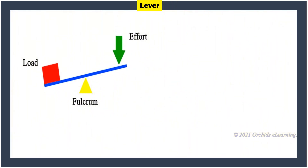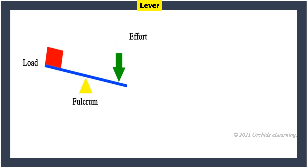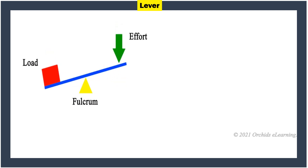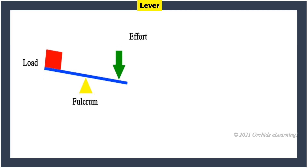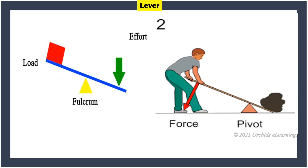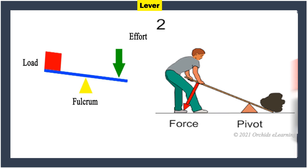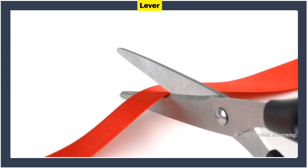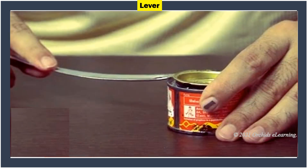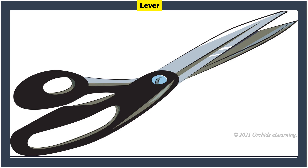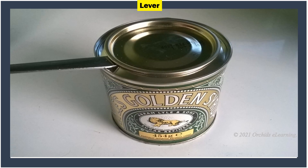Lever: A lever is a simple machine made up of a rod resting at a point around which it turns. It is used to lift or move heavy weights, cut things, or open the lid of a tin. A pair of scissors is an example of a lever. When we use a spoon handle to open the lid of a tin, the spoon acts as a lever.